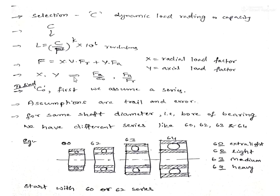To find X and Y values, we depend on two ratios: F_A/C₀ and F_A/F_R. When the inner ring is rotating, the rotation factor V is taken as 1; when the outer ring is rotating, V is taken as 1.2. For the bearing series: 0 is extra light, 2 is light, 3 is medium, and 4 is heavy series.